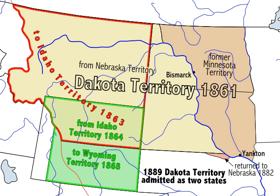Upon creation, Dakota Territory included much of present-day Montana and Wyoming as well as all of present-day North Dakota and South Dakota and a small portion of present-day Nebraska. A small patch of land known as 'Lost Dakota' existed as a remote exclave of Dakota Territory until it became part of Gallatin County, Montana Territory, in 1873.